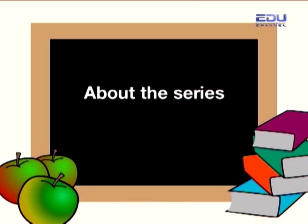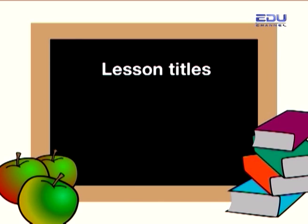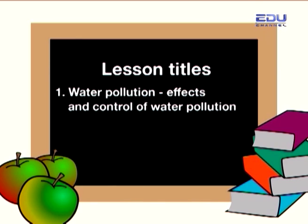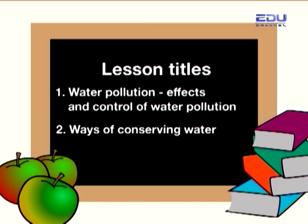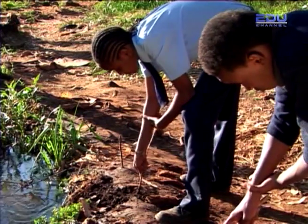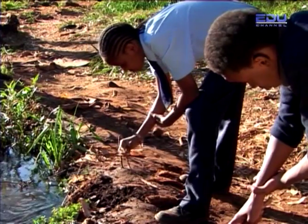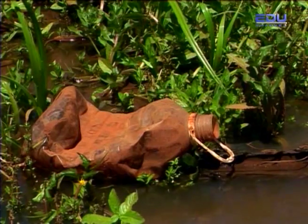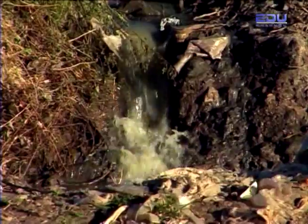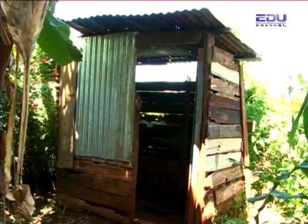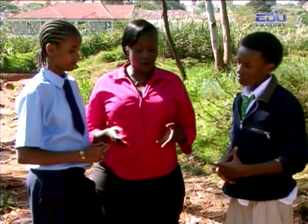There are two lessons in this series. The titles are Water Pollution: Effects and Control, and Ways of Conserving Water. In the two lessons, we follow the activities of two learners as they investigate how water gets polluted, the effects of pollution, and ways of controlling pollution. They are helped during the visit by the teacher, farmers, and people at a car wash. The mother always plays the role of a teacher in the lessons.